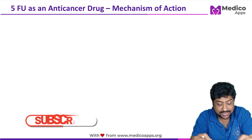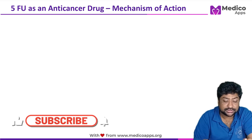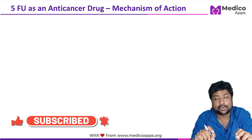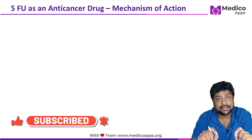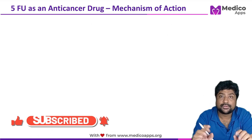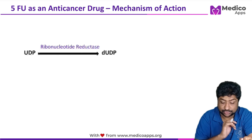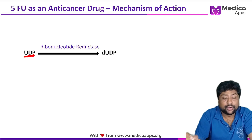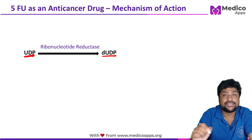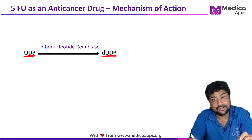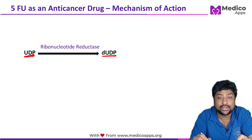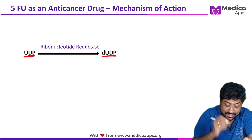Now let's start looking at this question. I'll show you two very important reactions that have multiple exam questions asked on them. The first reaction is the conversion of uridine diphosphate (UDP) to deoxyuridine diphosphate (dUDP), and the enzyme here is ribonucleotide reductase.